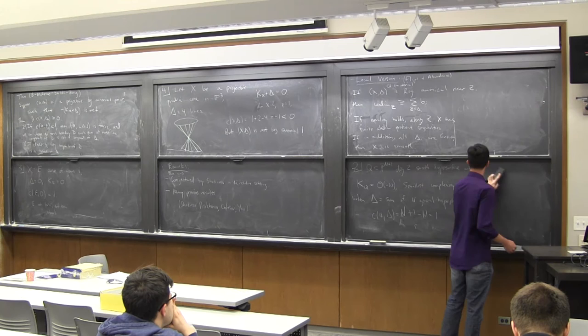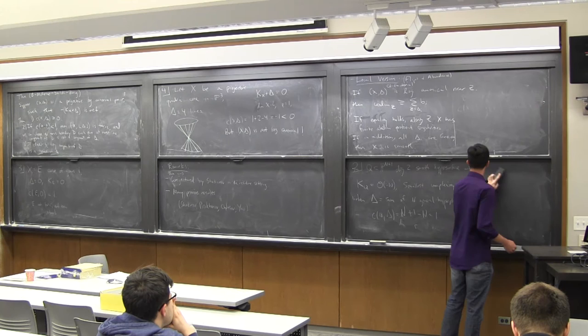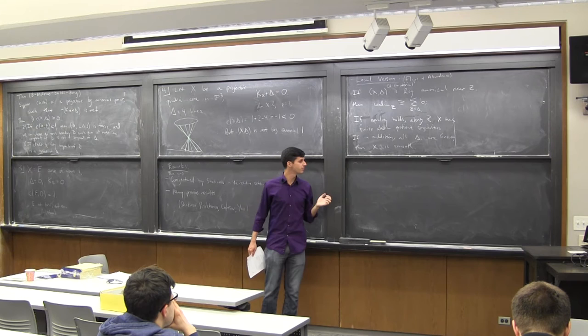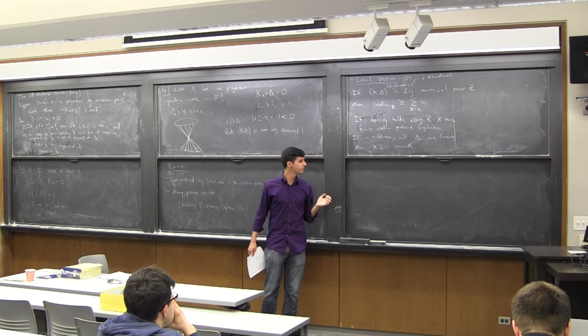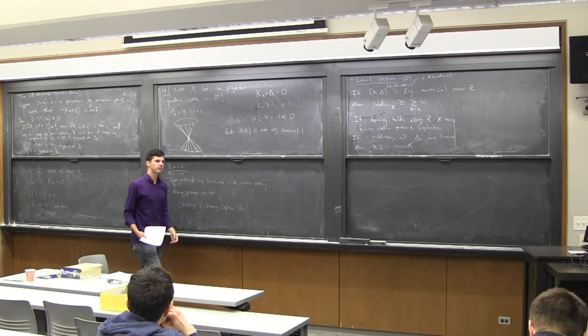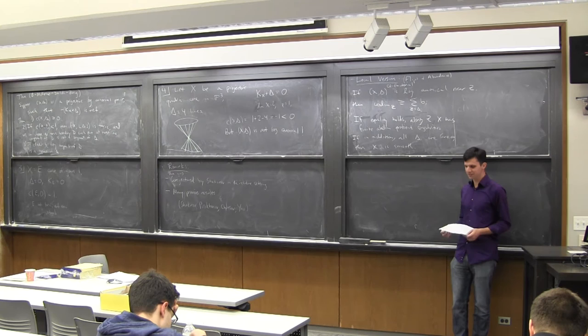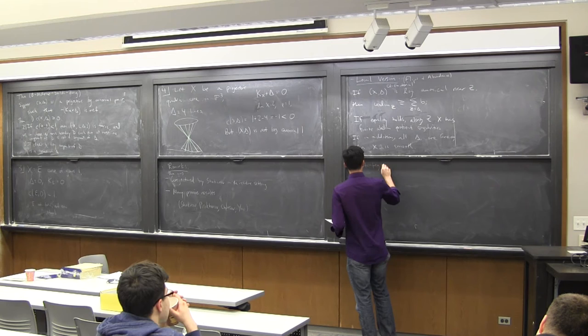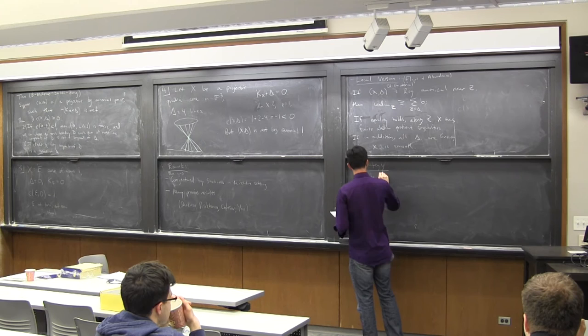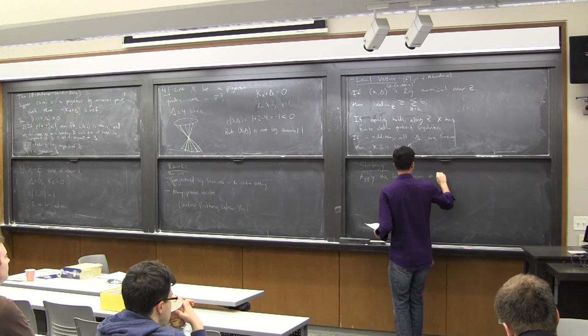As hinted by the local version, we want to bootstrap this result into the global case. The unpublished work of Cheltsov does this in the Picard rank one case using cones. We want some version of the cone construction that works when you have a larger Picard rank, and the right thing to do is to take the Cox ring in that case. So the slogan is: apply the local version to the Cox ring of X.